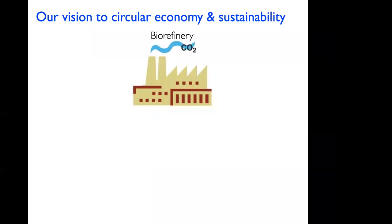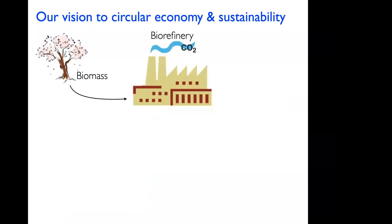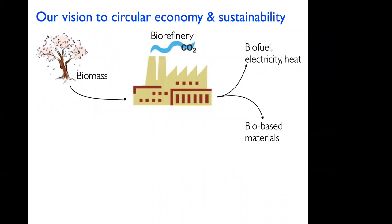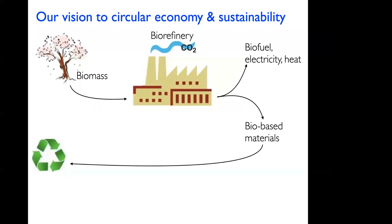In a circular bioeconomy, a biorefinery takes biomass and converts it to fuel, electricity, heat, as well as bio-based materials. These bio-based materials, once at end of life, are recycled or degraded — composted, producing CO₂, generating electricity, and so on. You grow more trees to capture this CO₂ and complete the circle. We are interested in adding another loop into this view.